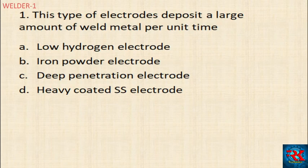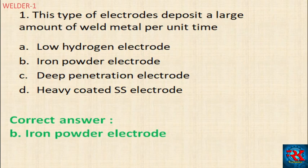First question: This type of electrode deposits a large amount of weld metal per unit time. What type of electrode? Options are: low hydrogen electrode, iron powder electrode, deep penetration electrode, heavy coated SS electrode. The answer is iron powder electrode.